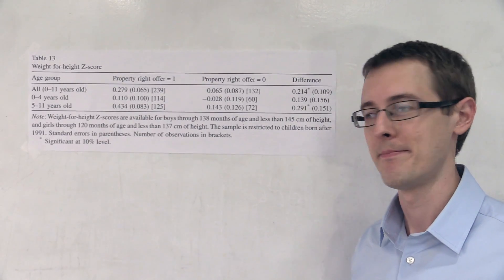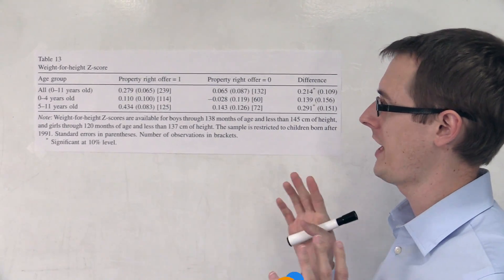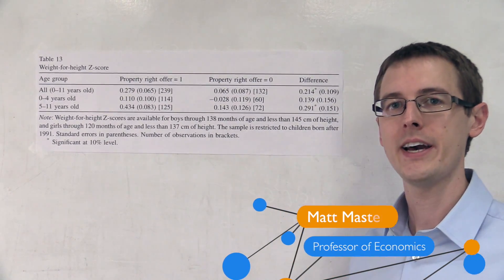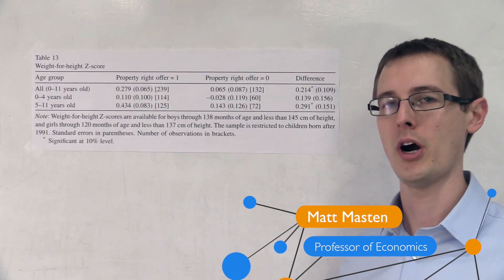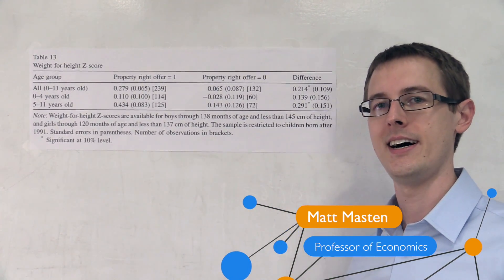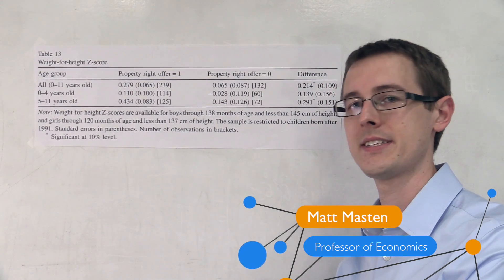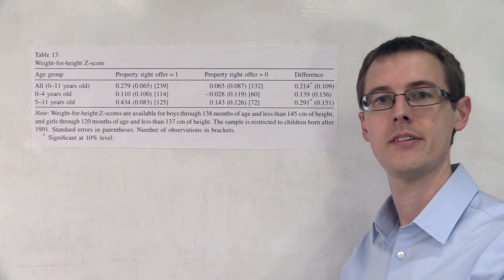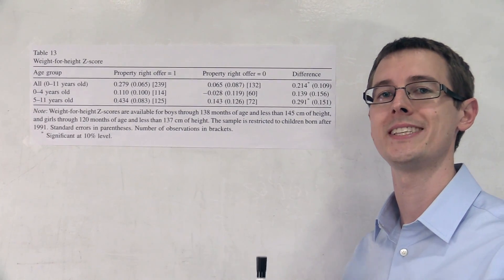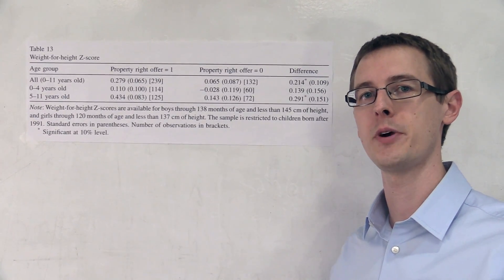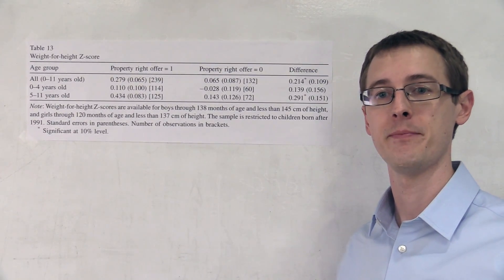Let's look at some data. We're going to try to figure out what the effect of having property rights is on things like child health, using this as-if natural experiment from Argentina.